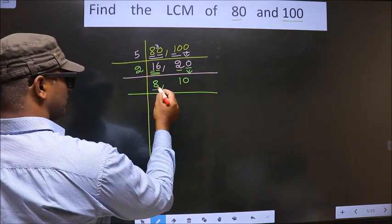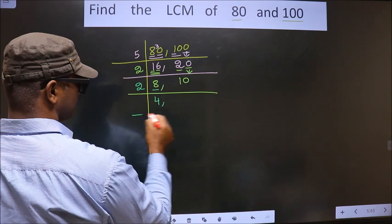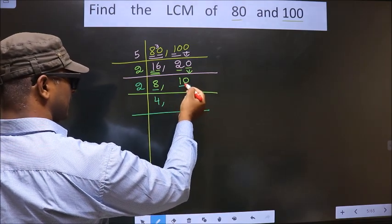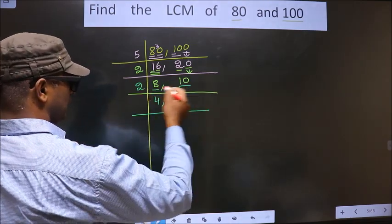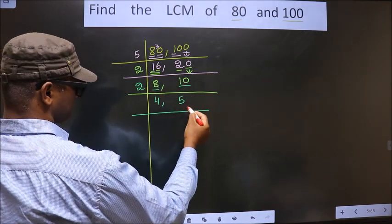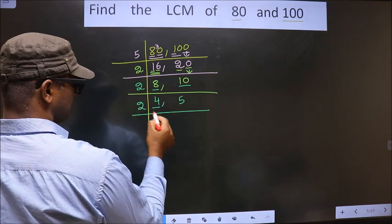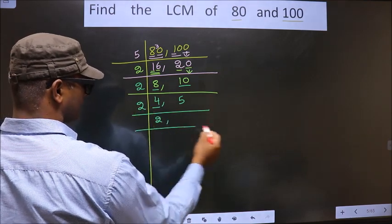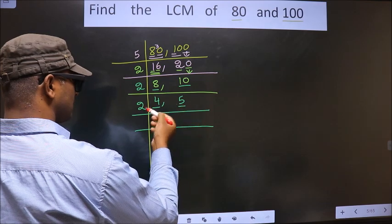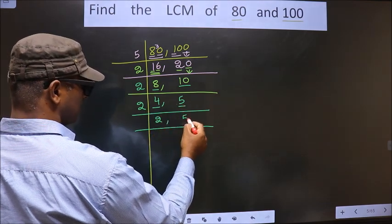Now here we have 8. 8 is nothing but 2 fours, which is 8. The other number is 10. 10 is divisible by 2. When do we get 10 in the 2 table? 2 fives are 10. Here we have 4. 4 is nothing but 2 twos, which is 4. The other number is 5. 5 is not divisible by 2, so it will be written down as it is.